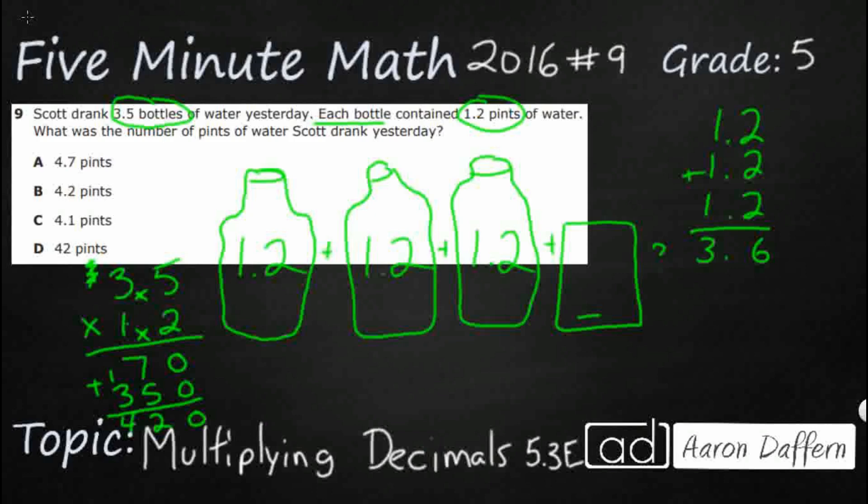Now we bring back the decimals. Here's the trick with multiplying by decimals. You count the number of digits that are behind the decimals in the factors. So you've got two factors. You've got 3.5 and you have 1.2.